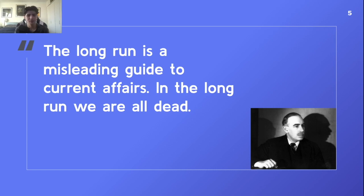What Keynes meant is there's no point waiting for markets to self-correct if the government can do something today. He was apt in identifying that the economy runs in a sort of income feedback loop — somebody's income is someone else's spending. Sometimes economies can enter negative depression spirals and may require government intervention to get out, although it's a highly debated topic today.